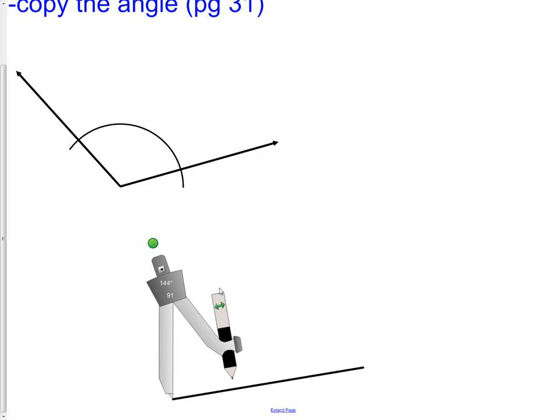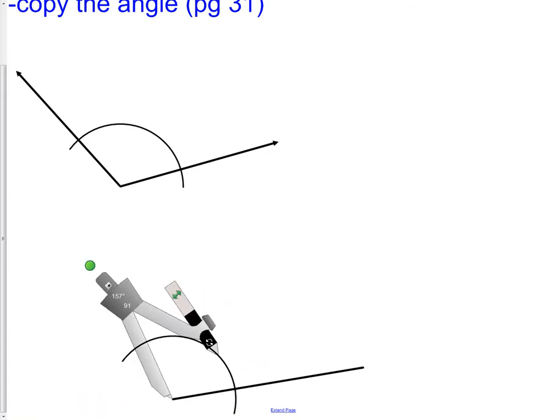We're copying it. So what we do on one angle, we do the exact same thing on the other. I need to create this arc. Now I've created it.